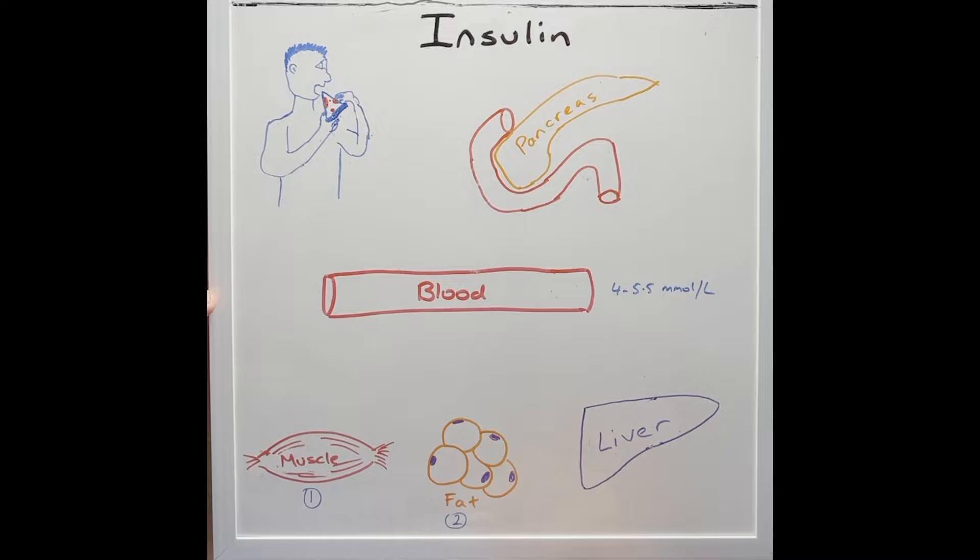Number one, muscles. Number two, fat tissue. And number three, the liver. Let's take a closer look to see how this works.